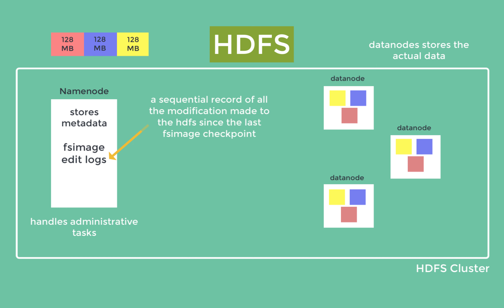Edit logs, also known as transaction logs, are a sequential record of all modifications made to HDFS since the last fsimage checkpoint. When the NameNode handles read and write requests, it continuously updates its metadata — such as creating, renaming, or deleting files and directories — and records those changes in the edit logs, not in the fsimage. The fsimage allows the NameNode to quickly recover its state during startup by loading metadata from the latest checkpoint. Without the fsimage, the NameNode would need to reprocess all edit logs, which could be time-consuming and impact cluster recovery time. Changes are written to edit logs in an append-only manner.